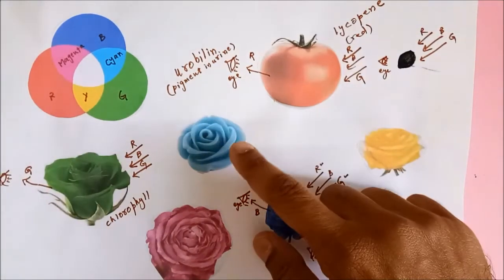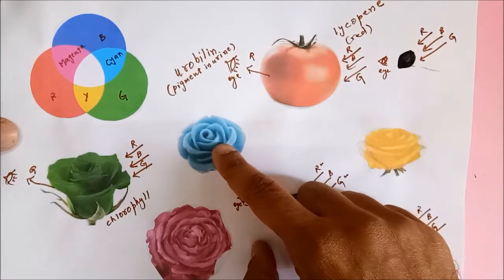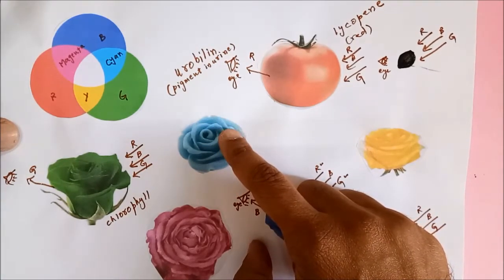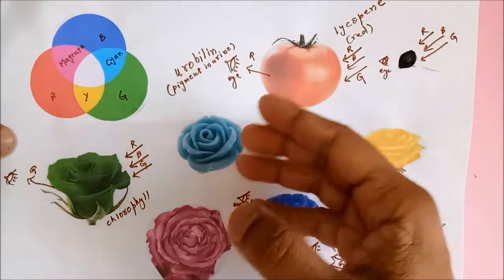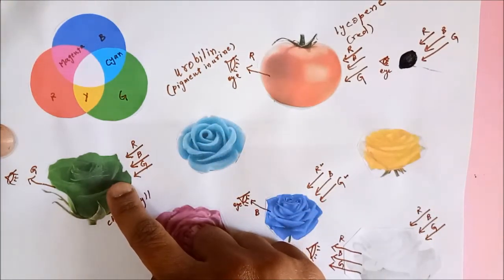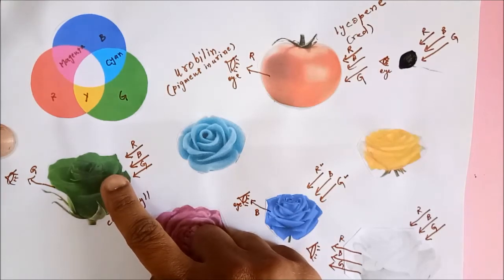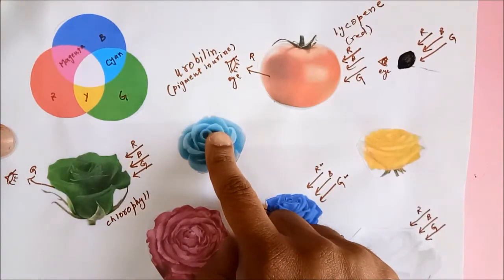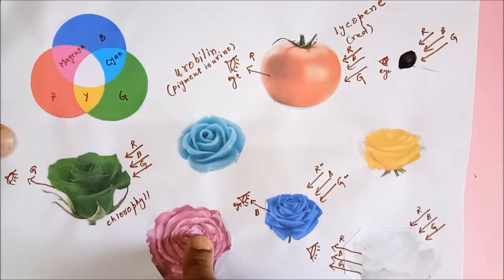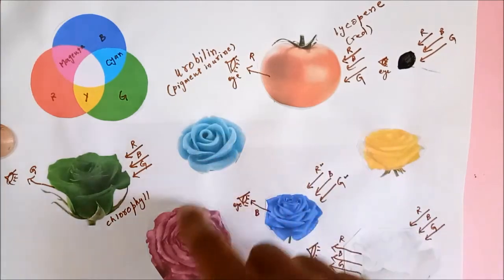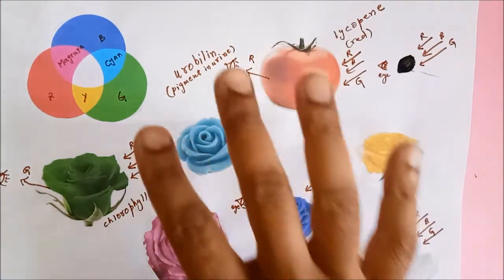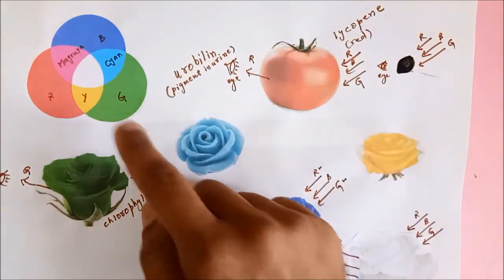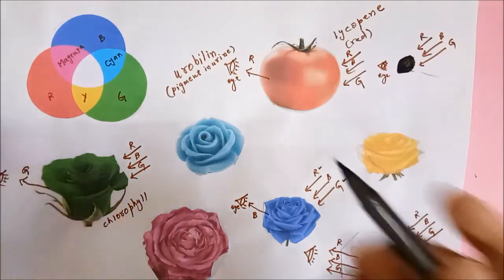Hello everyone, let's continue our discussion on the colors and the appearance of objects in different colors. In the last video tutorial we studied about the appearance of different objects in white light. Now let us talk about the cyan rose, magenta rose, and the yellow rose, which are actually the secondary colors. Here we are going to discuss only about white light first, and then we will continue our discussion with the other colors as well.